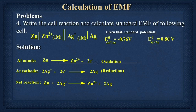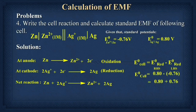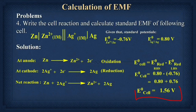Now it is time to calculate the EMF of the cell. Since both potentials are reduction potentials, we use the formula: E°_cell = E°_reduction (right) − E°_reduction (left). Putting in the values: E°_cell = 0.80 − (−0.76) = 0.80 + 0.76 = 1.56 V. This is the final EMF value for the zinc and silver cell.